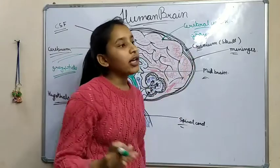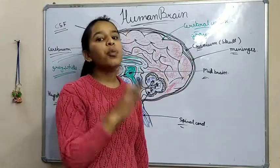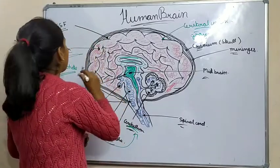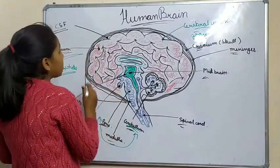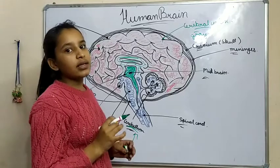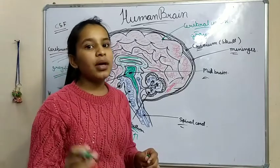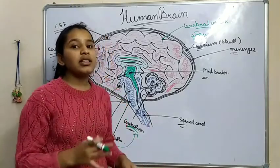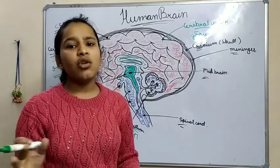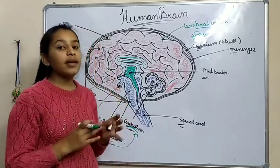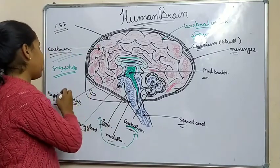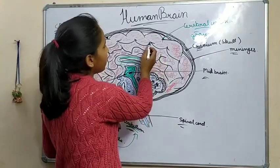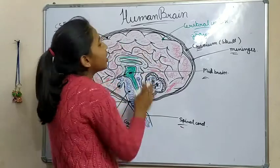The cerebral cortex is divided into four lobes. Cerebrum contains all our knowledge, all our behavior, all our language, everything we have studied and learned — all of that is retained in our cerebrum.